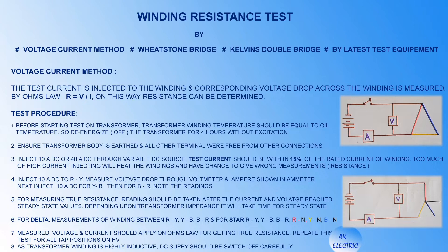Test procedure: before starting the test on a transformer, the transformer winding temperature should be equal to oil temperature. So de-energize the transformer for four hours without excitation. Ensure the transformer body is earthed and all other terminals are free from other connections. Inject 10A DC or 40A DC through a variable DC source. Test current should be within 15% of rated current of the winding. Too much high current will heat the windings and may give wrong measurements.